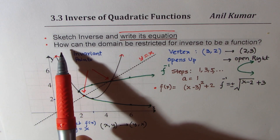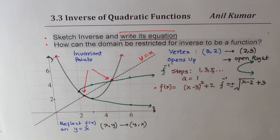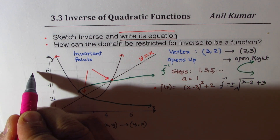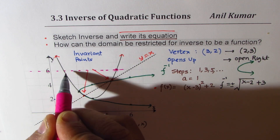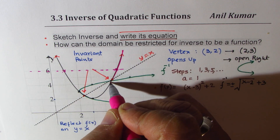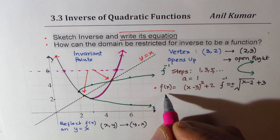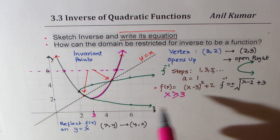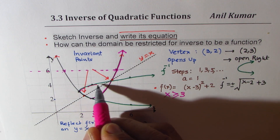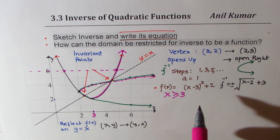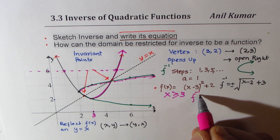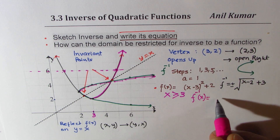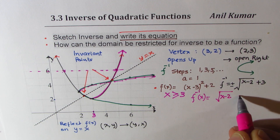The third part: how can the domain be restricted for the inverse to be a function? To restrict the domain, we need to consider one arm only, since the function fails the horizontal line test — a horizontal line crosses at two points. If we restrict the domain to x values greater than or equal to 3, we get the inverse of the upper arm. In that case, the inverse will be a function, whose equation will be positive √(x − 2) + 3.